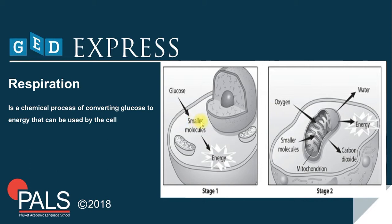Next, the smaller molecules react with oxygen inside the cell's mitochondria. This reaction produces carbon dioxide, water, and a large amount of energy. The cell now has enough energy to carry out its normal functions. What happens to the carbon dioxide? That's a different lesson.